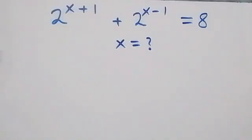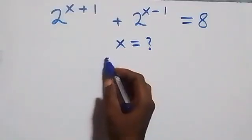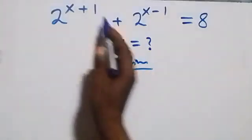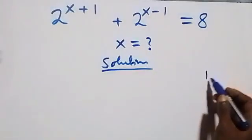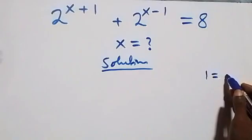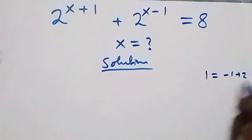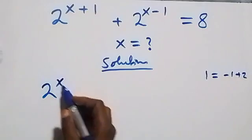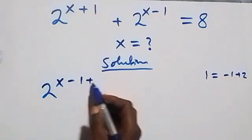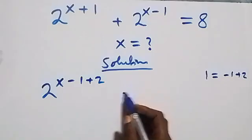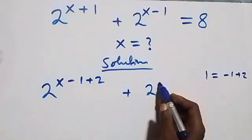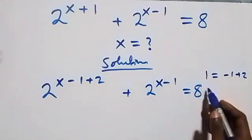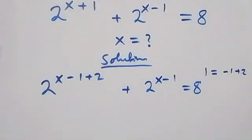Hello, you are welcome. How to solve this nice exponential equation. From what is given here, we can rewrite this — the exponent x can be written as x minus one plus two — so this equation becomes two raised to power x minus one plus two, plus two raised to power x minus one, equals eight.